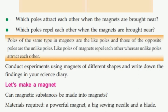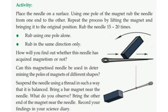Materials required: a powerful magnet, a big sewing needle, and a blade. Place the needle on a surface. Using one pole of the magnet, rub the needle from one end to the other. Repeat the process by lifting the magnet and bringing it to the original position. Rub the needle 15 to 20 times.